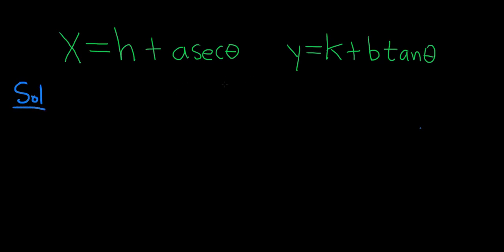Whenever you have parametric equations with secants and tangents, or sines and cosines, or sinhs and cosinhs, usually a good idea is to solve for the function itself. In this case, solve for the trig function. So let's go ahead and solve each of these for the trig function.